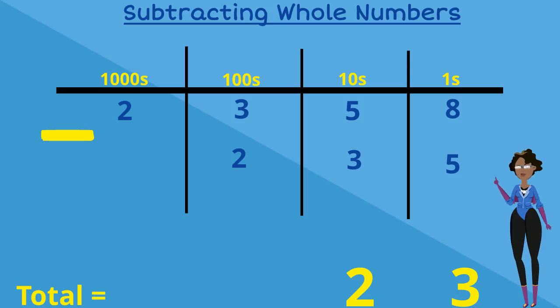In our hundreds column we have 3 minus 2, which is equal to 1, so 1 goes under the hundreds column in the total space. There is nothing to subtract in the thousands column, so the 2 is simply brought down to our answer section.